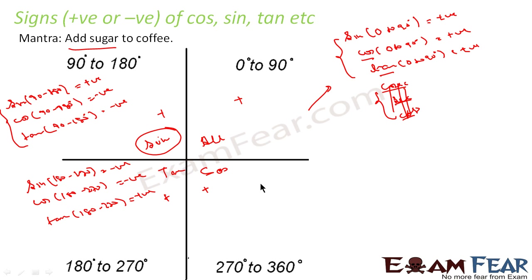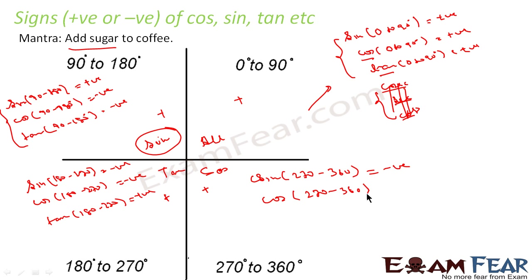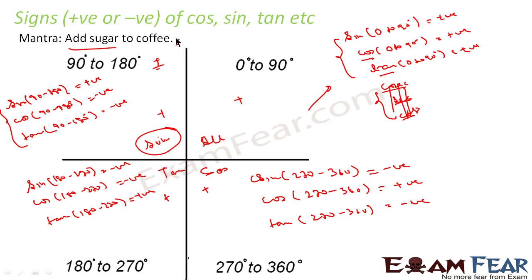For the last range, 270° to 360°, sine of any number from 270° to 360° is always negative. Cos of any number from 270° to 360° gives you positive, and tan of any number in this range gives a negative value. Note that sine divided by cos equals tan, so positive divided by negative gives negative, and negative divided by negative gives positive.